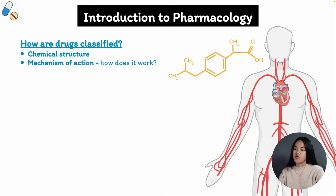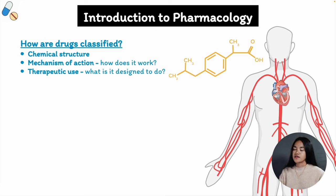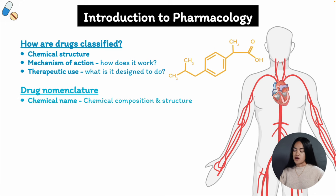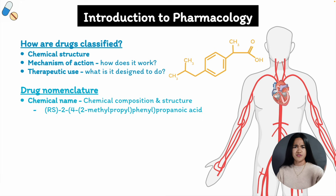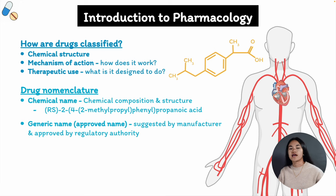Another way to classify drugs is based on therapeutic use — what is the drug designed to do? For example, drugs can be classified as depressants, analgesics, or antibiotics based on their effects on the body. Many drugs have multiple different names, and there are three main systems for naming drugs: chemical, generic, and proprietary. Chemical names are based on the drug's chemical structure and are often complex and difficult to remember — they are primarily used by chemists and researchers.